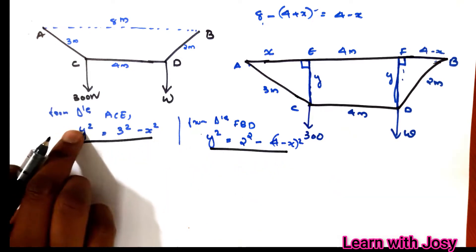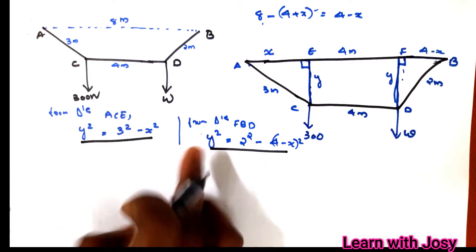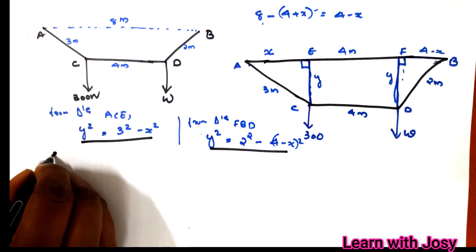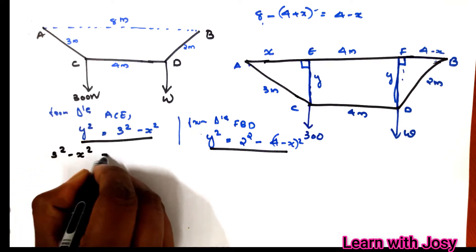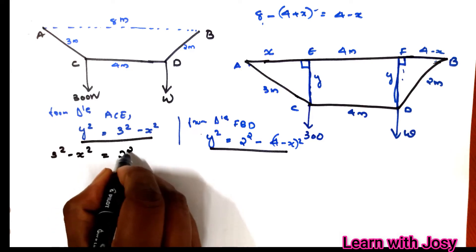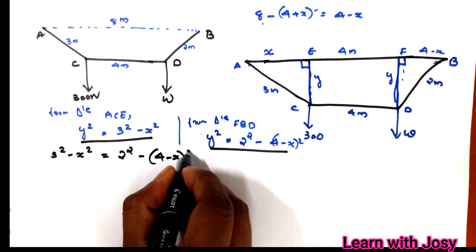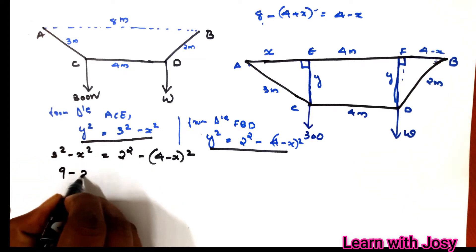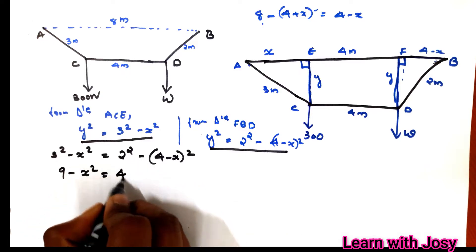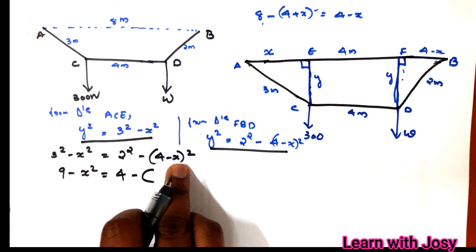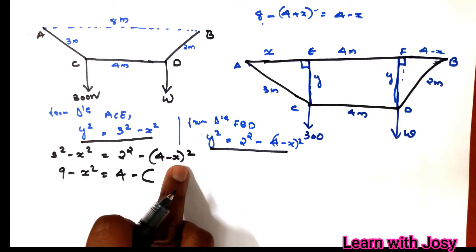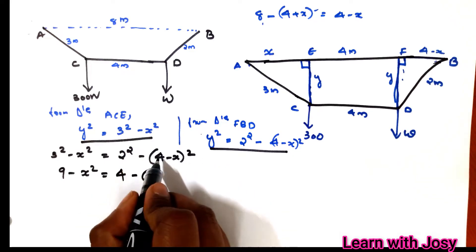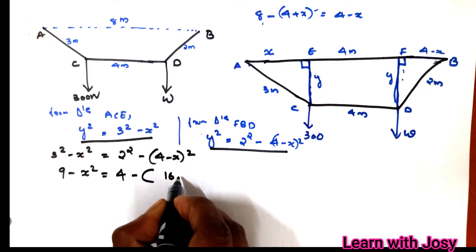We now have two equations with y-squared on the left side. Setting them equal: 3-squared minus x-squared equals 2-squared minus (4-x) whole squared. Expanding using (a-b)² = a²-2ab+b²: 4-squared gives 16, minus 2 into 4 into x gives 8x, plus x-squared.